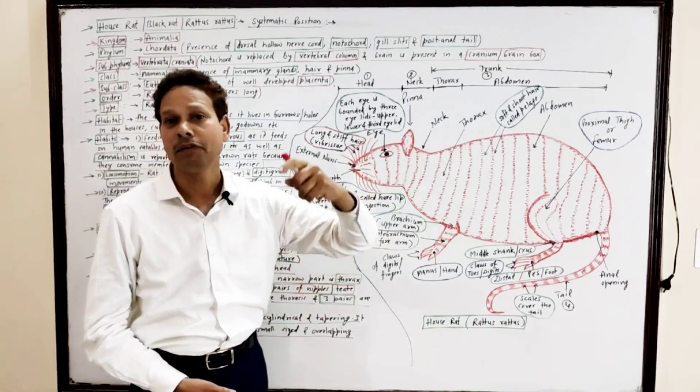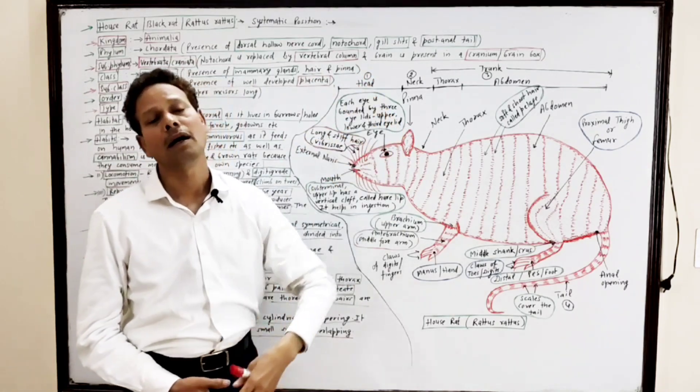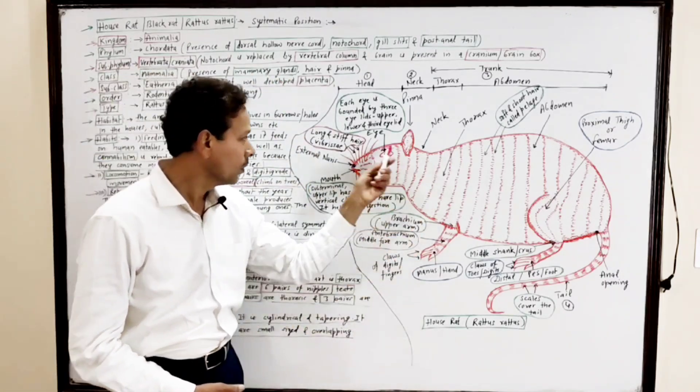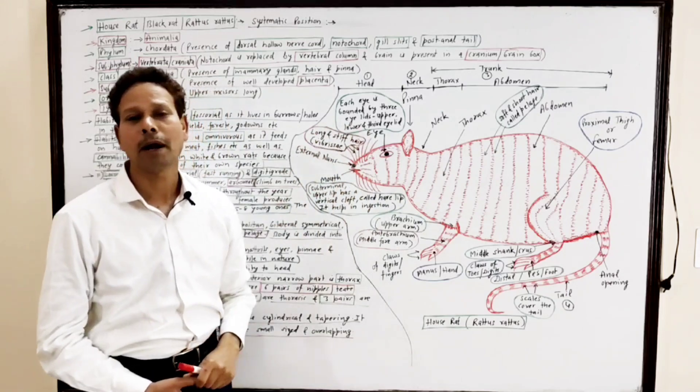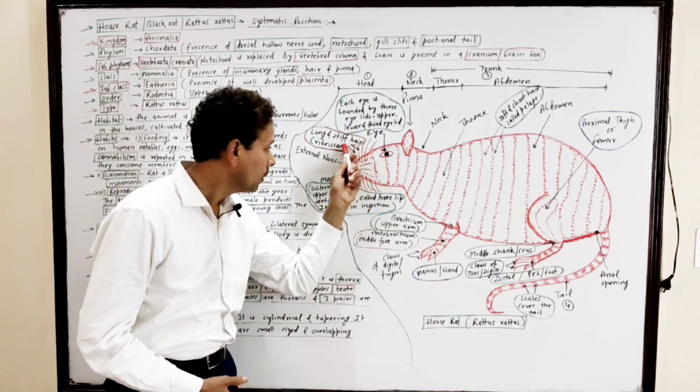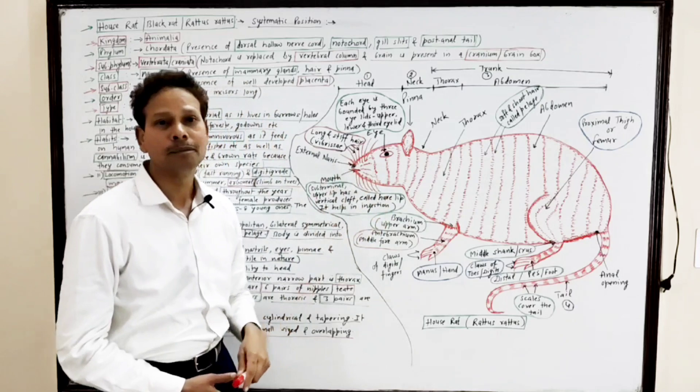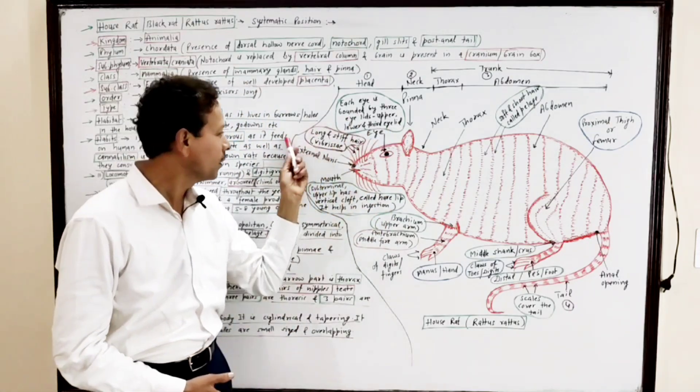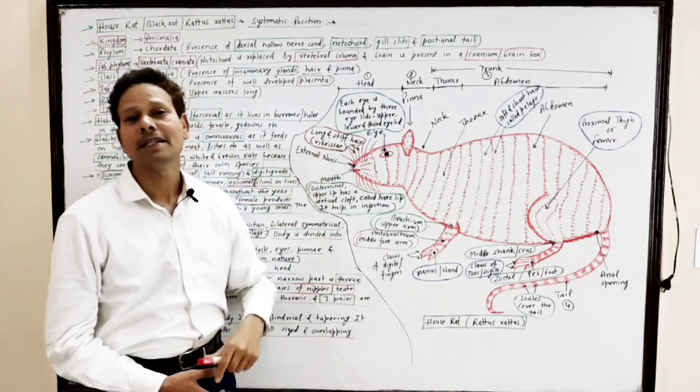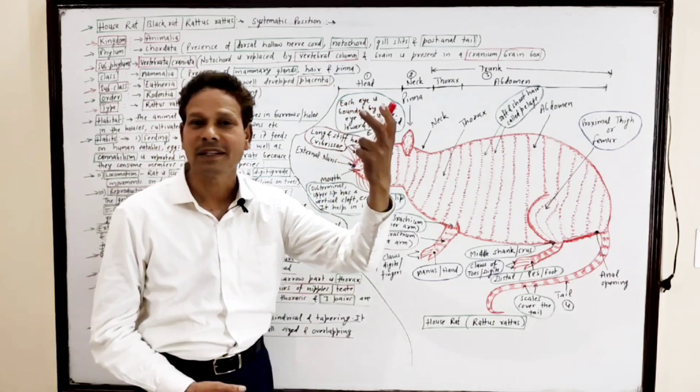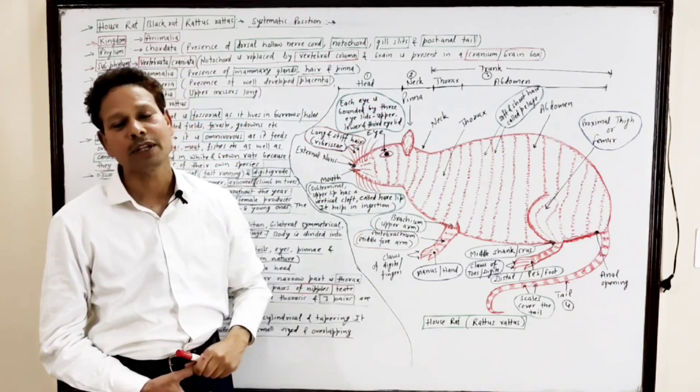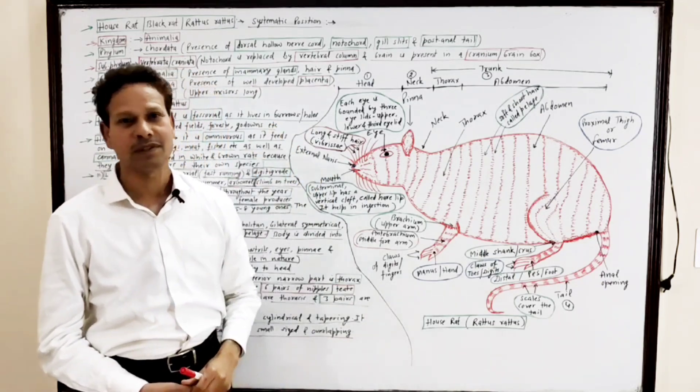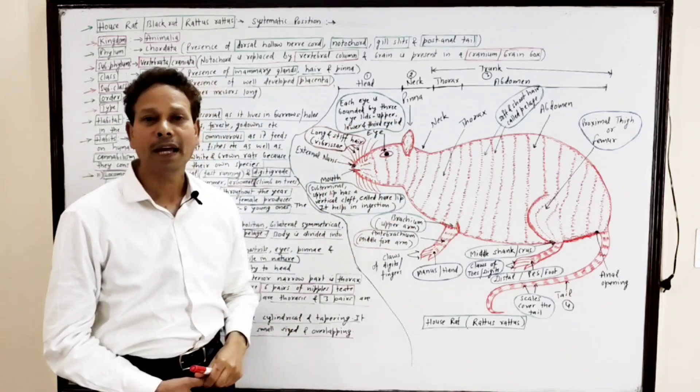These are a pair of movable pinnae which receive sound waves. As well as, the mouth anterior part of head region is surrounded by long, stiff hair, the vibrissae. These vibrissae are sensitive structures, tactile structures which are sensitive to touch.